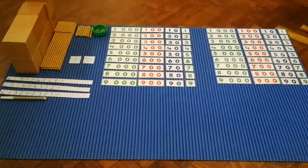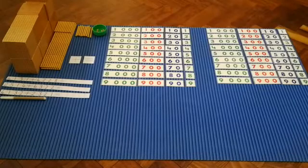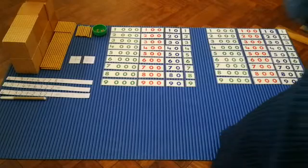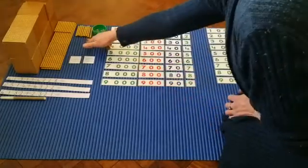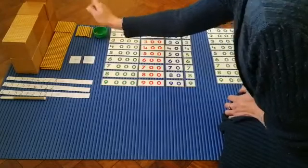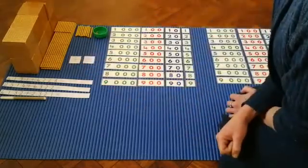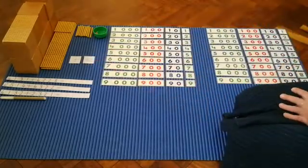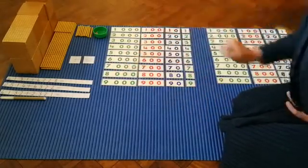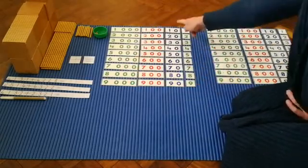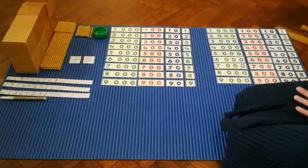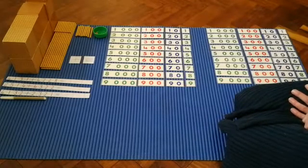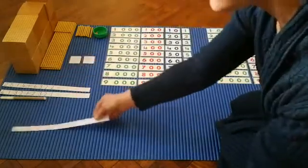Today I have lots of things on my mat. I have golden beads: nine thousands, nine hundreds, nine tens, nine units. I have the addition symbols - the plus sign and the equals sign. I have our numbers, two sets of numbers laid out - our units, our tens, our hundreds, and our thousands. And today we are going to do some sums. So let's look at our first sum.